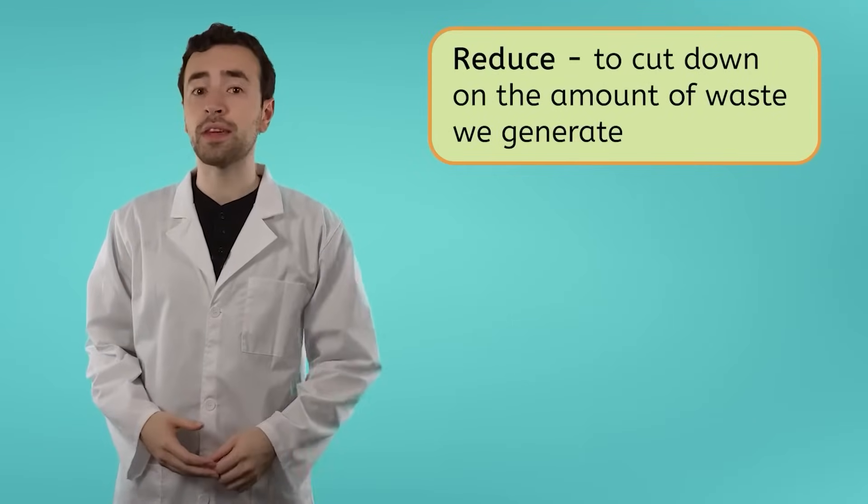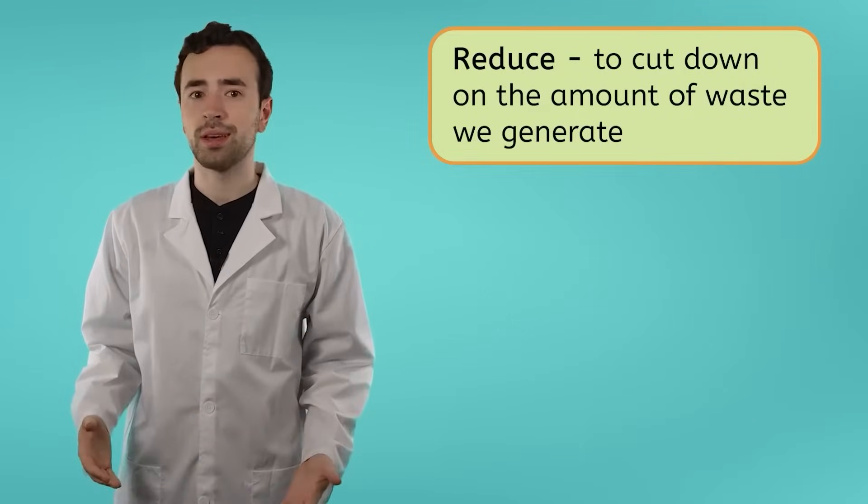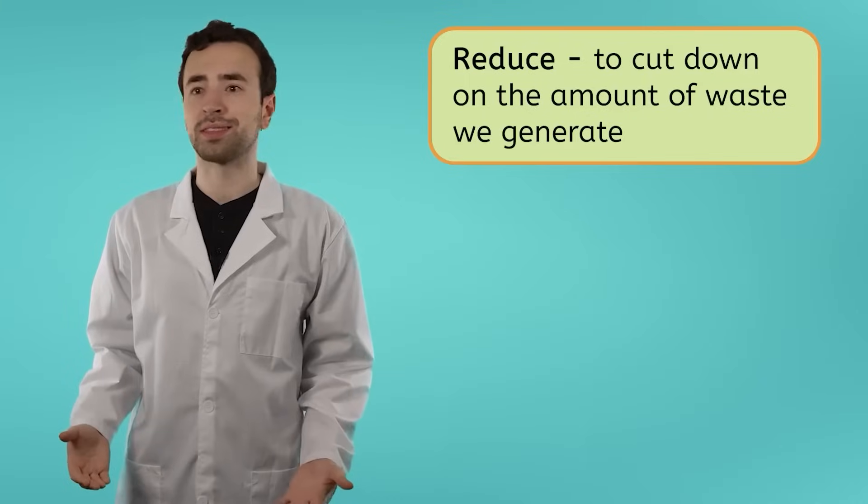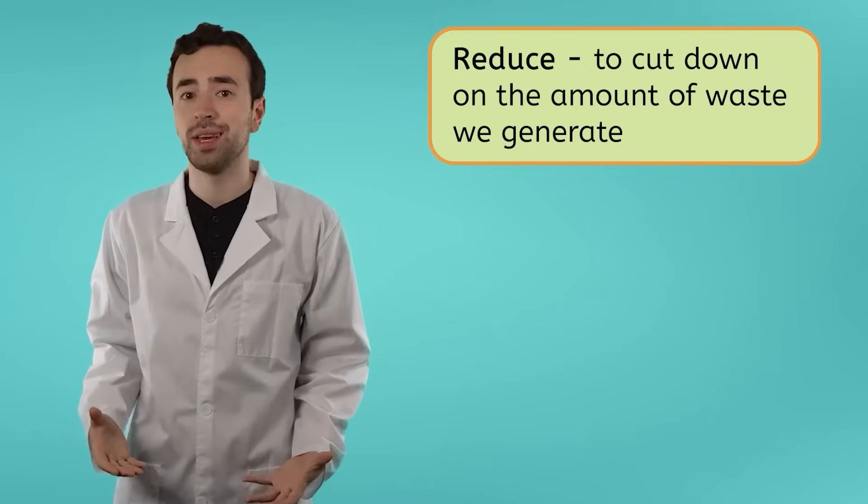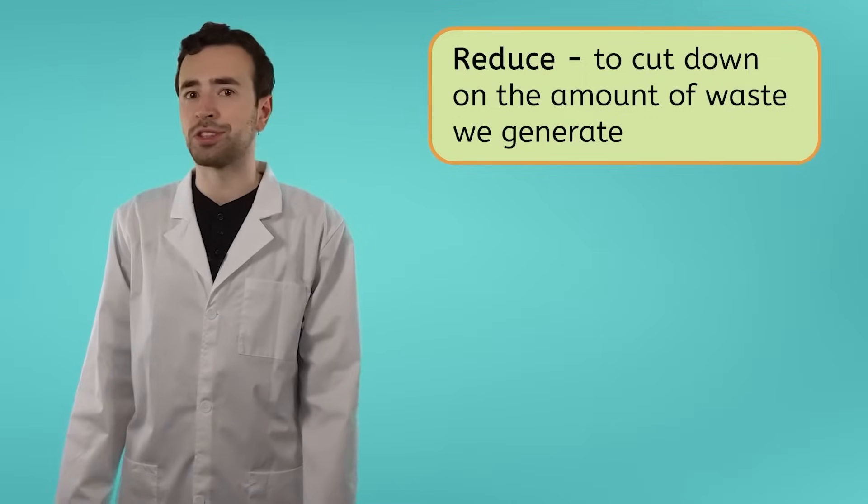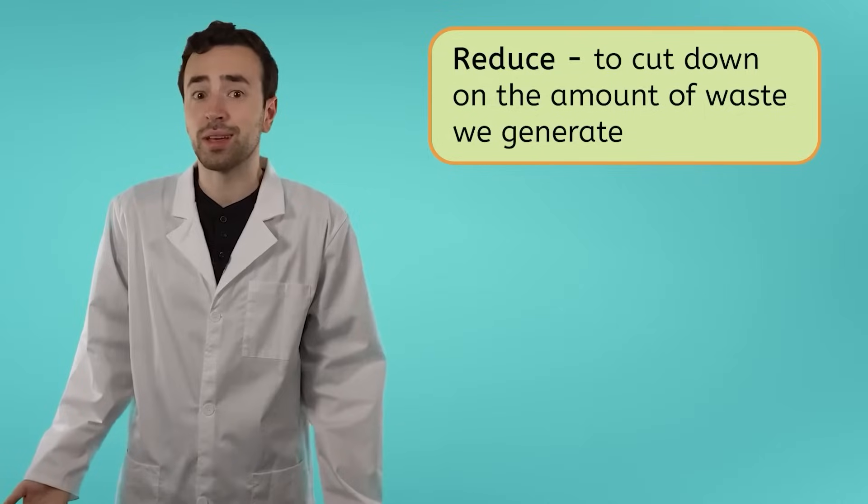The first R, reduce, means to cut down on the amount of waste we generate. It's the first of the three R's because it's the method that has the most impact on decreasing waste. The best way to prevent waste is to just not create it in the first place. Reducing is all about making mindful choices that help create less waste. For example, a big way to reduce is by avoiding single use or disposable items.